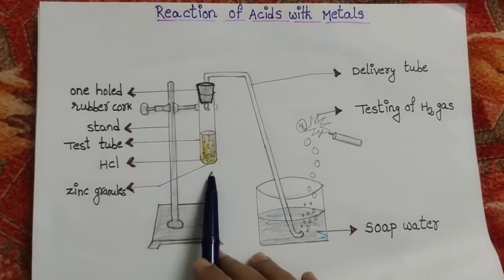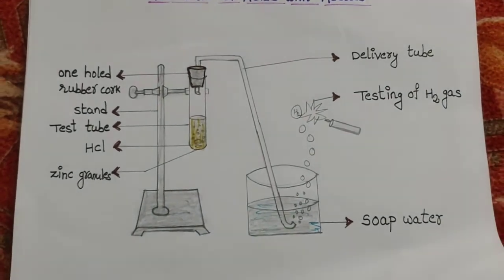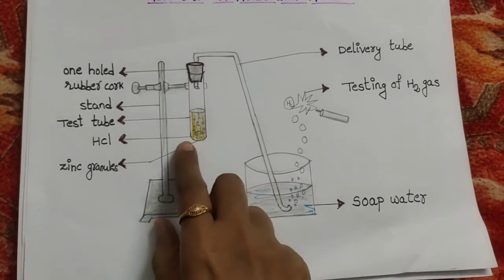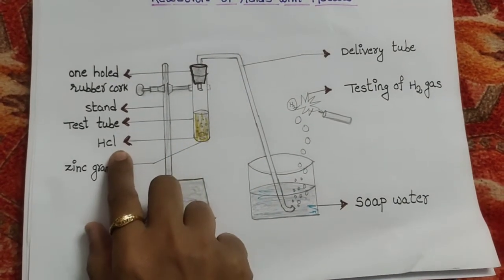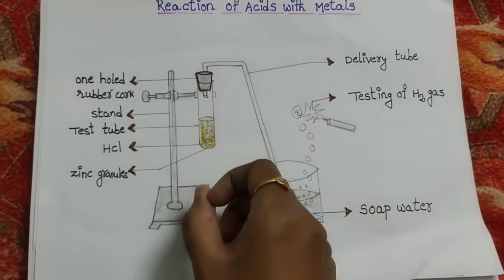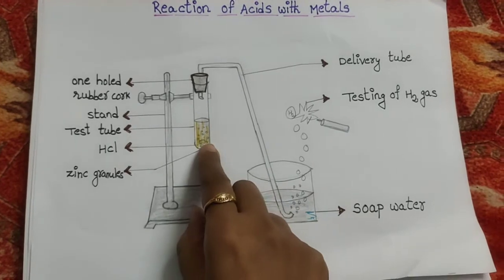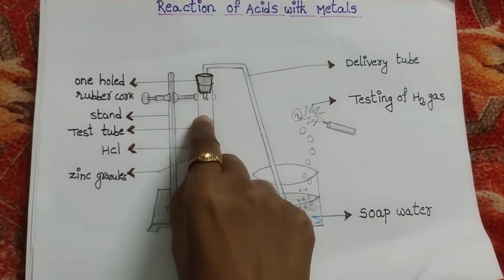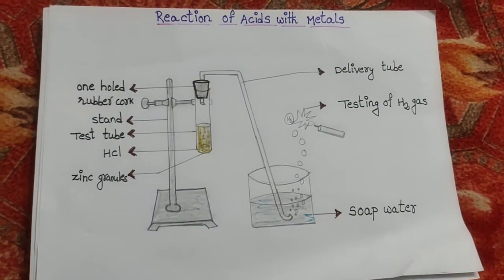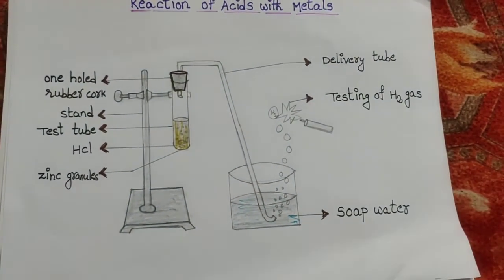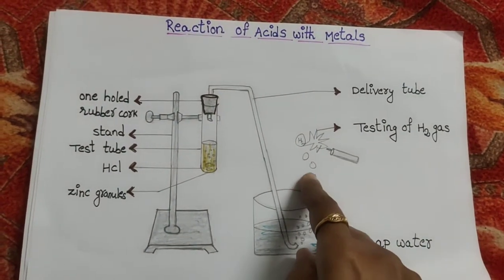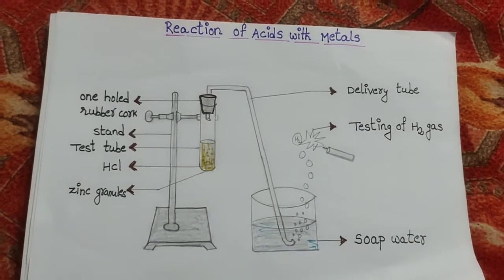This is the procedure and reaction. First, take a test tube and add zinc and HCl. One of the gases gets released through the delivery tube. We observe bubbles and gas release.